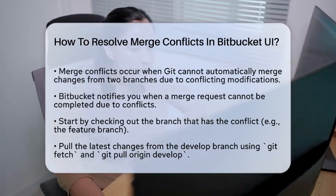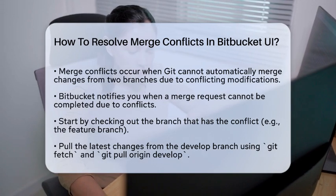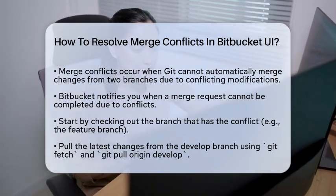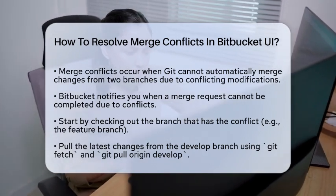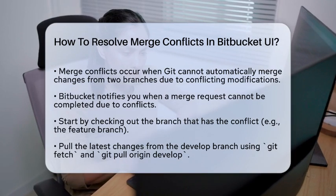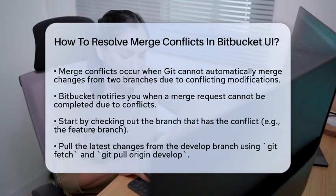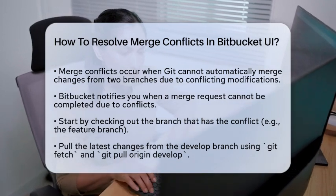When you try to merge a branch and a conflict occurs, Bitbucket will let you know that it can't automatically merge the request due to conflicts. Here's what you do next.